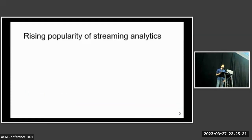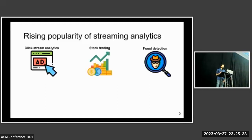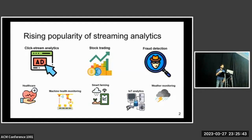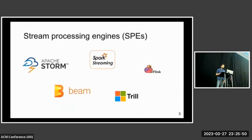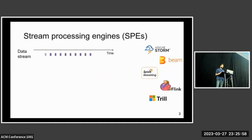Streaming analytics applications are widely used in industries like social media, financial institutions, and investment firms. These applications process live data and make real-time decisions. In recent years, streaming analytics applications are finding even wider adoption in areas like healthcare, agriculture, and climate science. Stream processing engines are specialized systems designed to support these types of long-running applications.